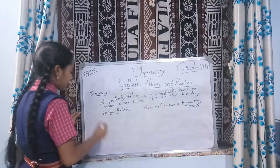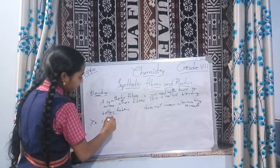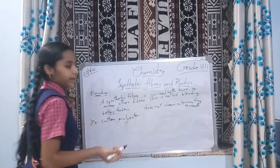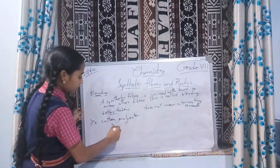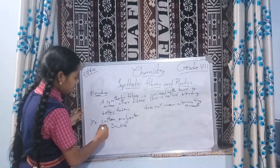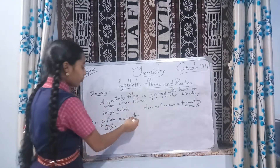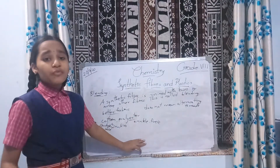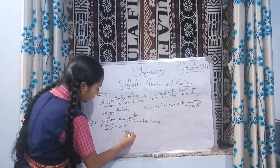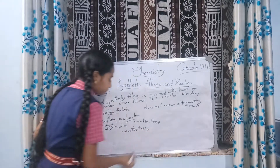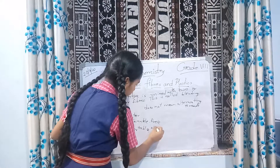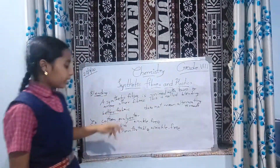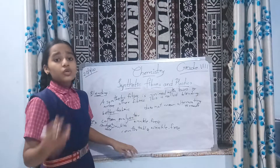Let's take an example: cotton and polyester. Cotton forms wrinkles but is comfortable, whereas polyester doesn't form wrinkles — it is wrinkle-free. When we mix both in a proper ratio, the resulting fiber will be both comfortable and wrinkle-free.